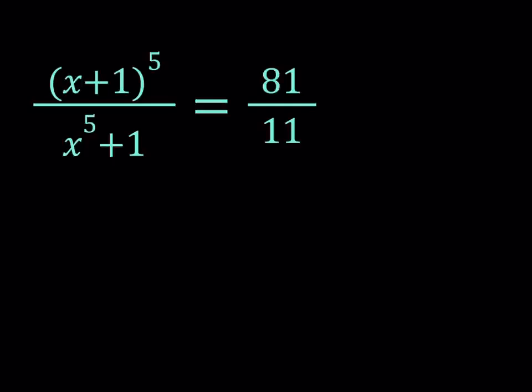Hello everyone. In this video we're going to be solving a quintic equation. We have the quantity x plus 1 to the 5th power divided by x to the 5th plus 1, and that is equal to 81 over 11, and we're going to be looking for x values, real and complex. So let's get started.